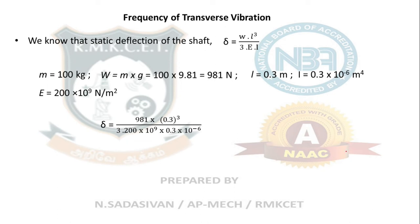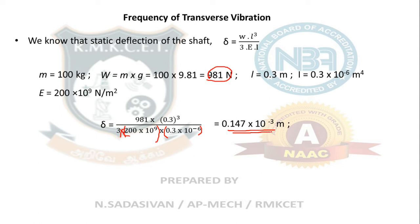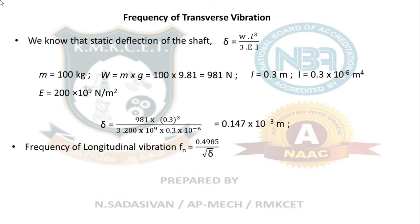For the transverse vibration case, the formula is δ = WL³ / 3EI. Here, W = 981 N, L = 0.3 m, and I = 0.3 × 10⁻⁶ m⁴. The deflection comes around 0.147 × 10⁻³ m. The natural frequency formula is fn = 0.4985 / √δ. So 0.4985 divided by the root of 0.147 × 10⁻³ comes to 41 Hz — this is the frequency of this vibration.